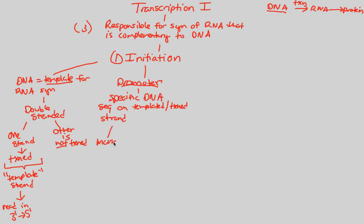This promoter marks the start of the gene at the 3' end of the template strand. To start the whole process — transcribing a gene, translating it, and expressing it as a functional protein — you need a promoter. It tells you on the DNA sequence exactly where to begin initiation, promoting that specific DNA sequence at the start of that specific gene.